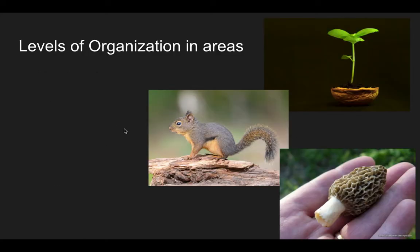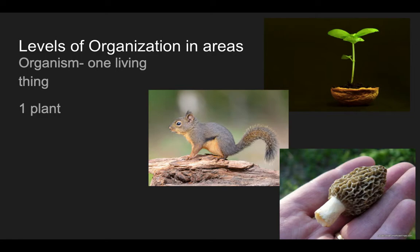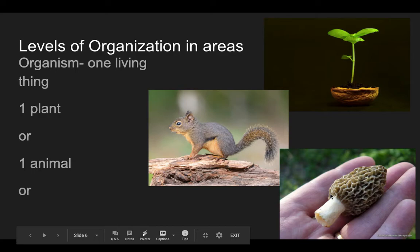Levels of organization in areas — there are just a few. The first one is organism. An organism is one living thing. We can have one plant, we can have one animal, or we could have one fungus, in this case a mushroom.